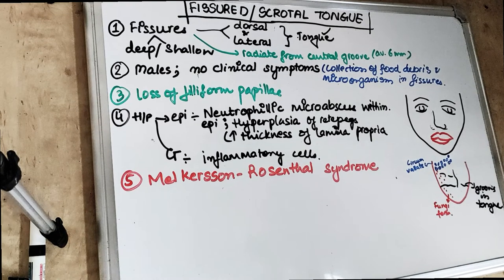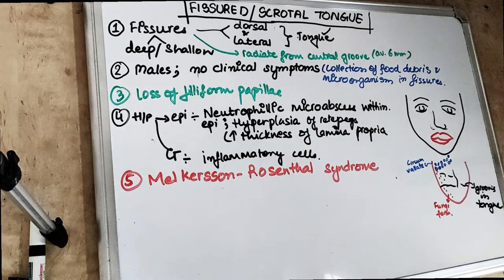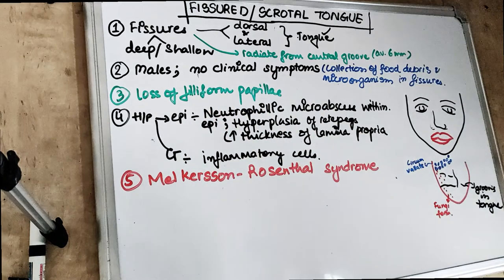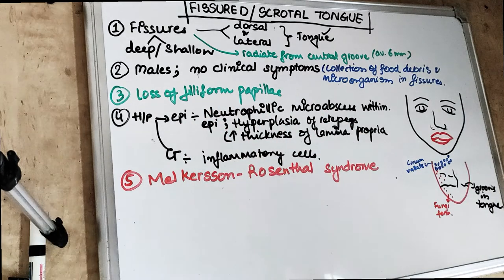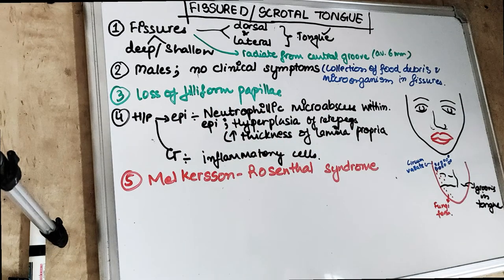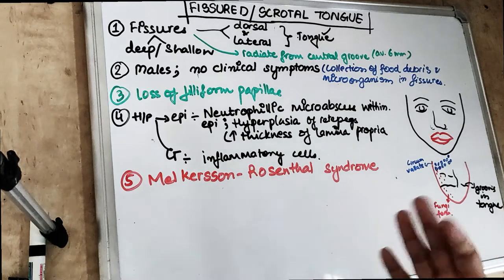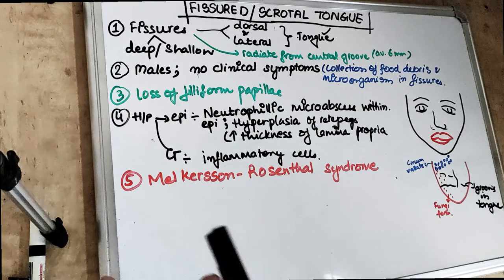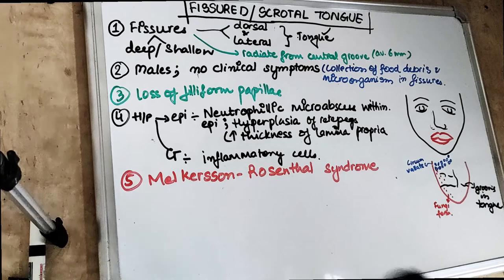Welcome back to our 5 in 5 series, where we cover each topic under 5 headings in 5 minutes. In today's video, we are going to talk about the fissured or the scrotal tongue. This is not a disease or something — it is just a developmental anomaly.